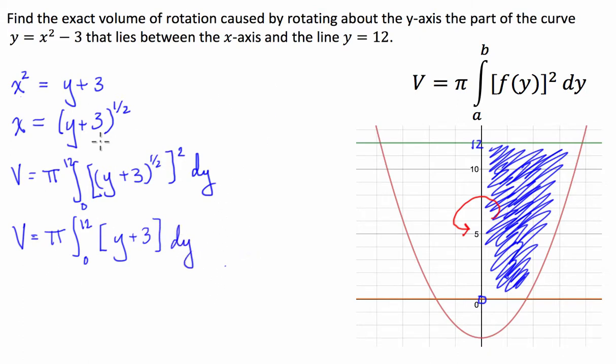So what we do is we take our integral now. So this is equal to pi times y squared over 2 plus 3y, evaluated between 0 and 12.